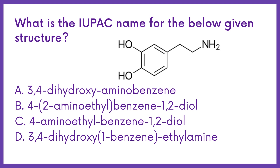What is the IUPAC name for the below given structure? Option A: 3,4-dihydroxy-aminobenzene. Option B: 4,2-aminoethyl-benzene-1,2-diol. Option C: 4-aminoethyl-benzene-1,2-diol. Option D: 3,4-dihydroxy-1-benzene-ethylamine.